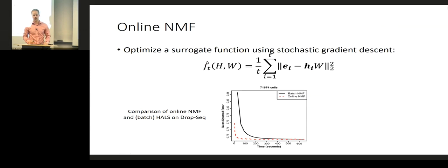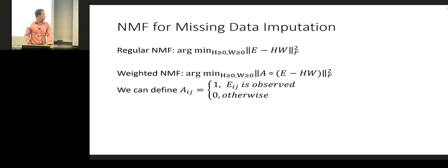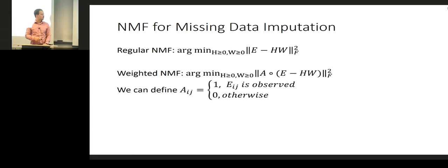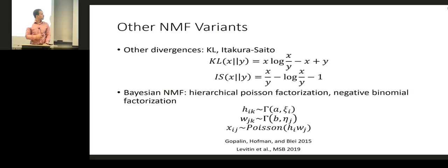NMF is actually really good at missing data imputation because of its parts-based representation. A simple extension is to define a weight matrix where A_ij is one if the data is observed and zero otherwise, then optimize the objective using the element-wise matrix product between A and the loss. You can optimize this using any of the strategies presented, and then impute the missing elements of the matrix using a factorization trained only on the observed elements. I haven't implemented this yet for iNMF, but it's something I wanted to do.